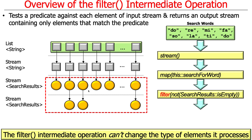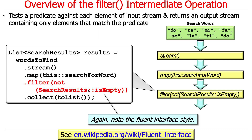Another thing to remember about the filter operation is it cannot change the type of the elements it's processing. Map can change the type but always returns the same number of elements. In contrast, filter will potentially return fewer elements but cannot change the type — it always has to have the same output type.